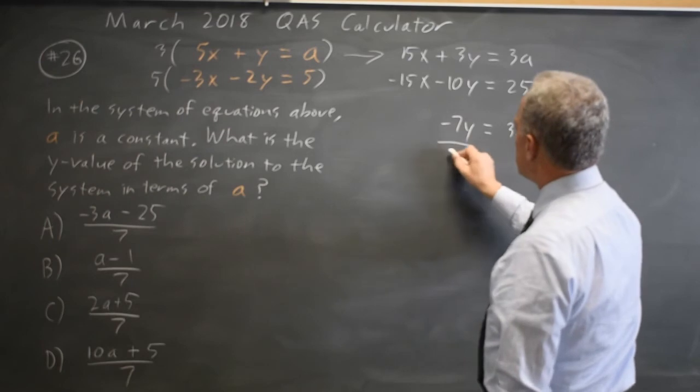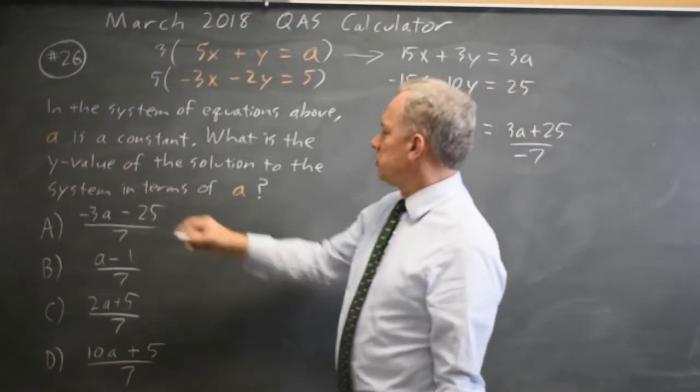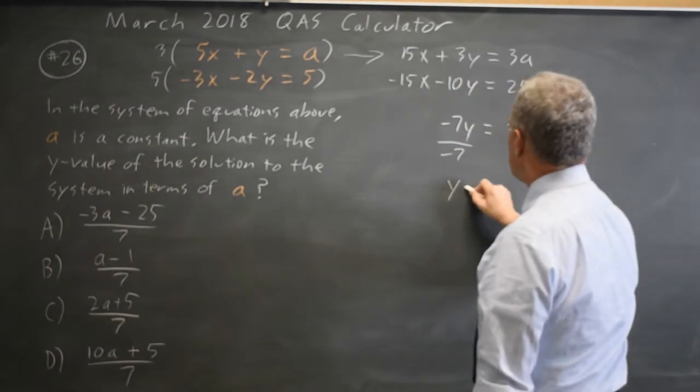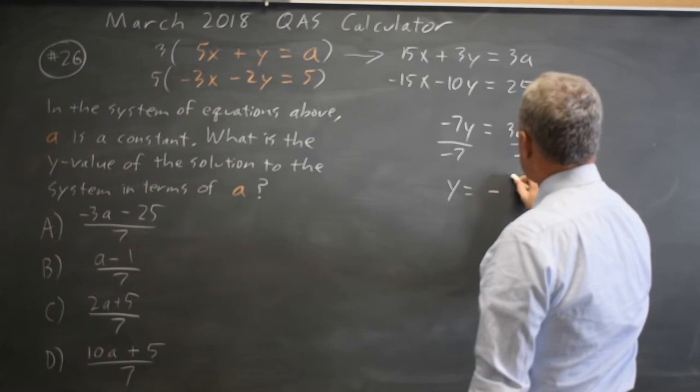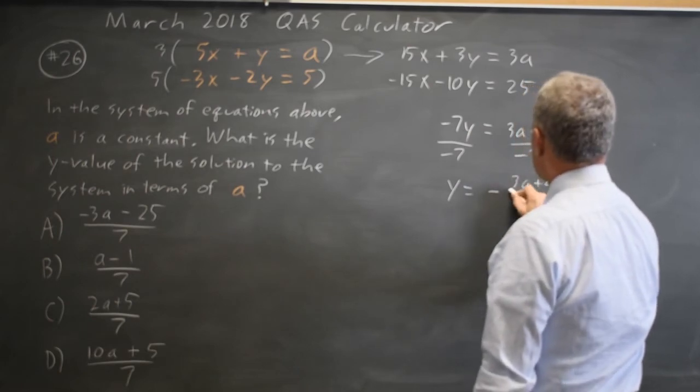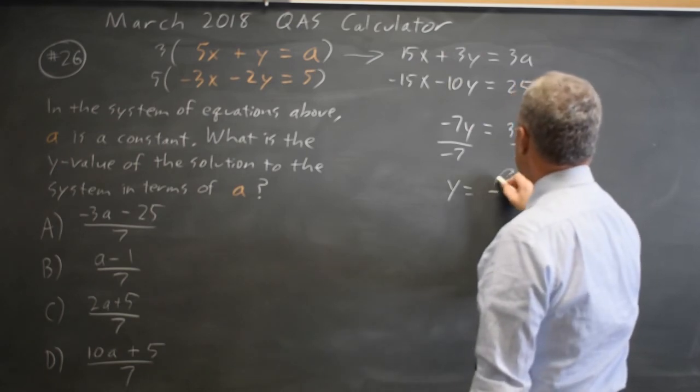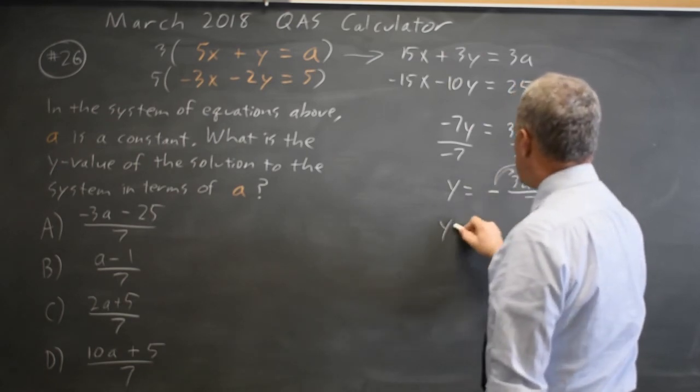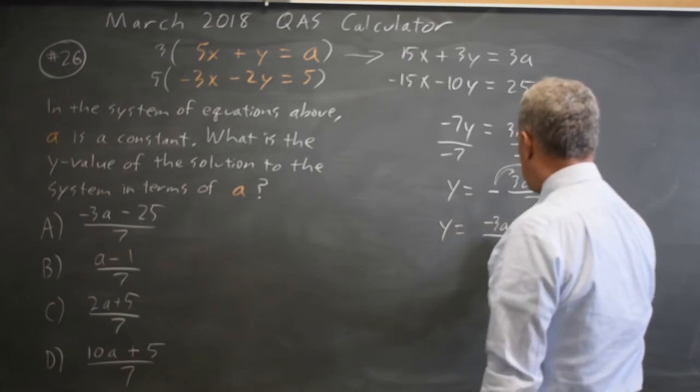Dividing by negative 7 to get y by itself, because they're asking for the y value of the solution, I get y equals, I can pull the negative out front, negative 3a plus 25 over 7. And I could distribute the negative to the 3a and the 25, y equals negative 3a minus 25 over positive 7.